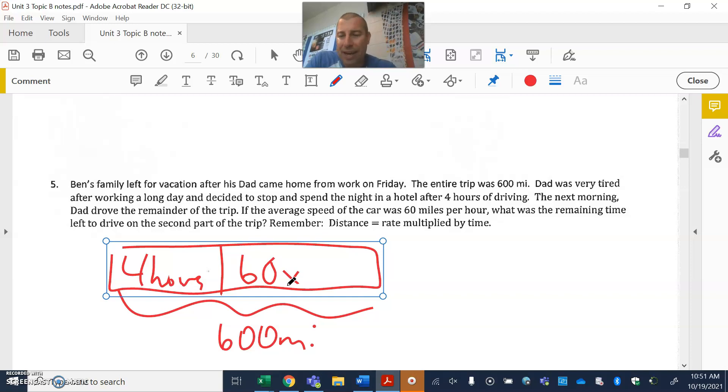This is why we write things out, because at first we're like, 'I don't know where to go with this,' but now I can see my equation. The four hours plus the 60 times the x, because x is representing hours here, has to result in the 600 that we're looking at here. Visual in action.